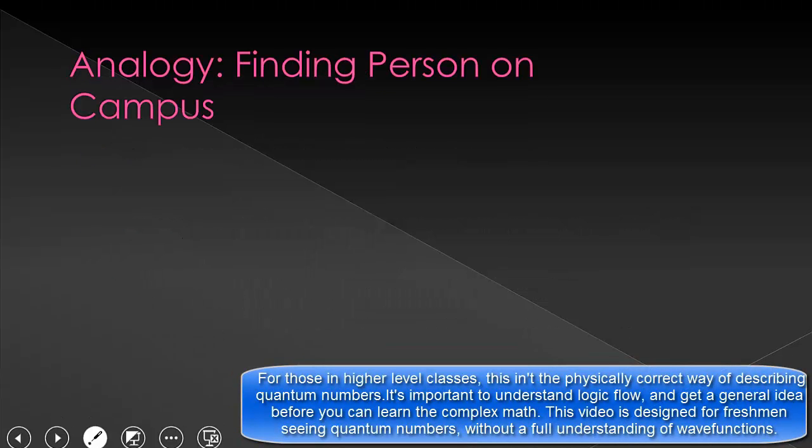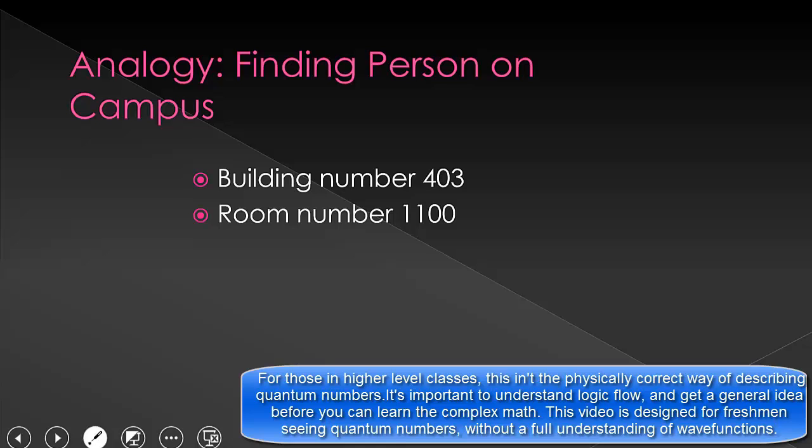For instance, say that we're trying to find a person on campus. We could start by saying that they must be in building 403. This may describe a thousand students at a given time. We could then do more describing by saying they are in room 1100. This gets us to a specific lecture hall. So building 403, room 1100 may describe, let's say, 400 students. By stating the building number, we limited ourselves to how many students we could be talking about. By stating the room number, we limited it further. It is also worth noting that other buildings might have a room 1100, and so that would describe a different set of students.